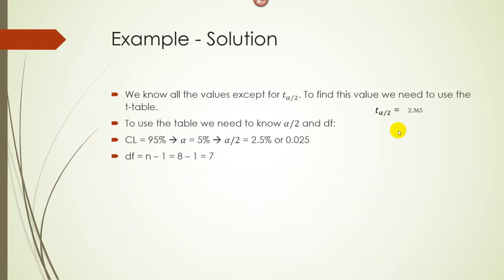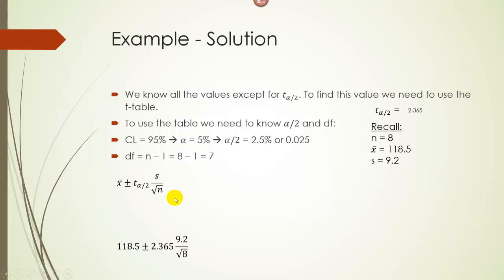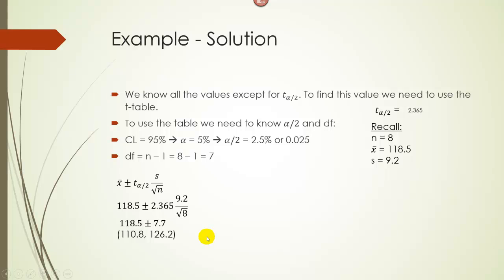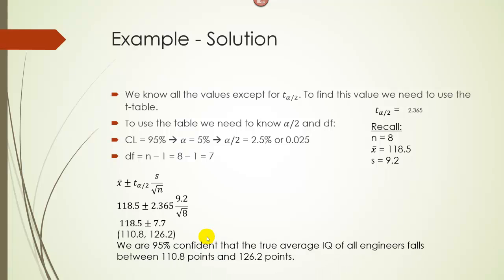Plugging into our formula: 118.5 plus or minus 2.365 times 9.2 over the square root of 8. The margin of error works out to approximately 7.7. So our interval is 118.5 plus or minus 7.7, giving us 110.8 to 126.2. We are 95% confident that the true mean IQ of all engineers falls between 110.8 points and 126.2 points. Note this was completely made-up data.